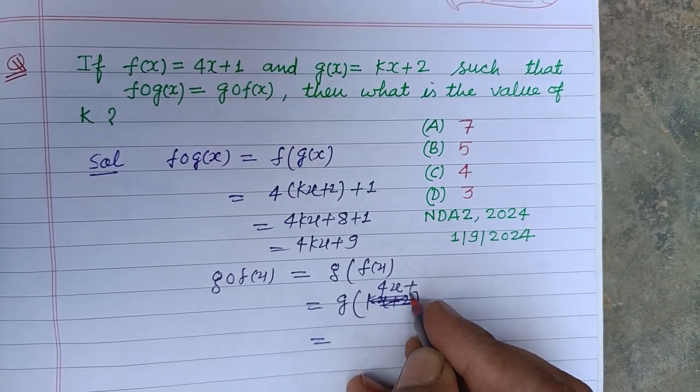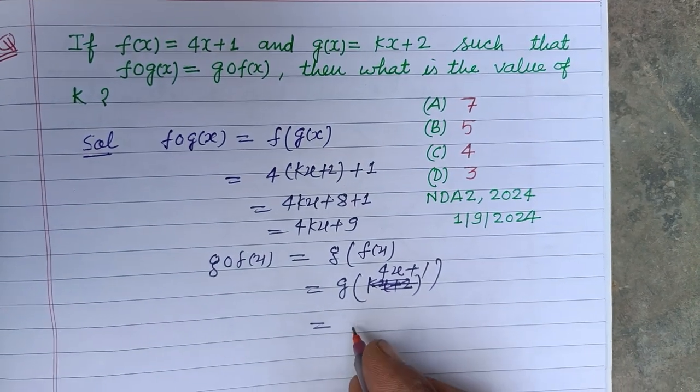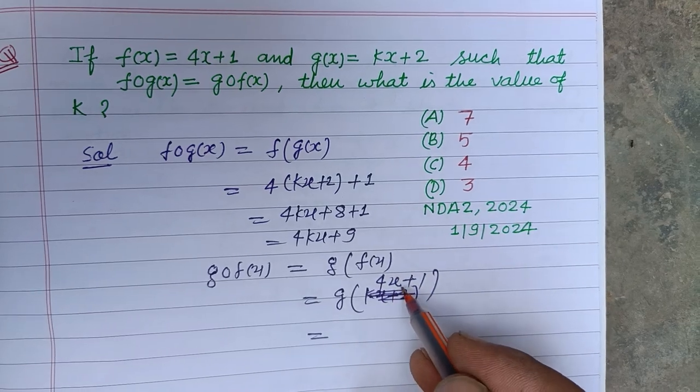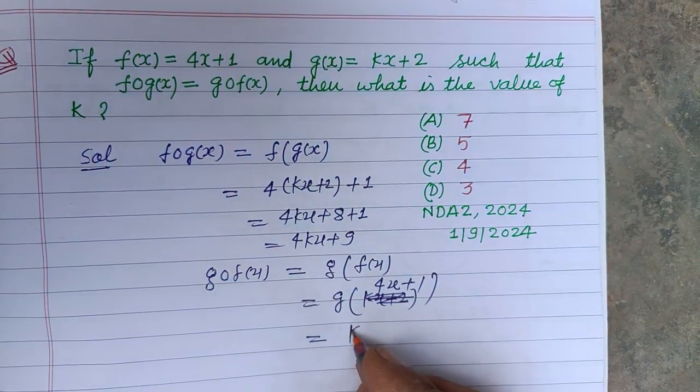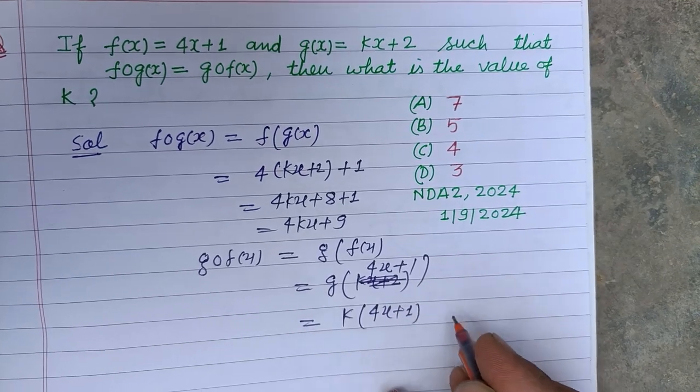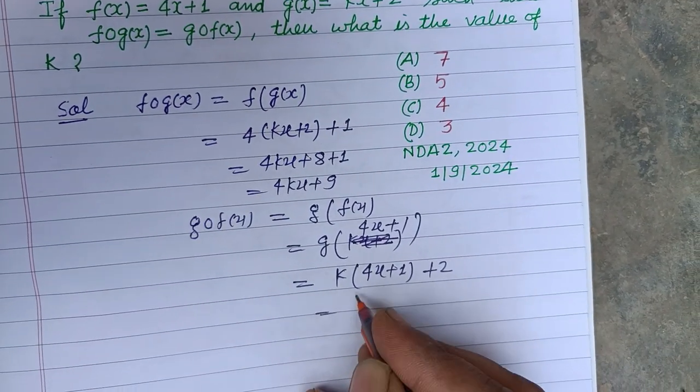So this is k times (4x plus 1) plus 2, which gives us 4kx plus k plus 2. Since f∘g(x) equals g∘f(x), we set these values equal.